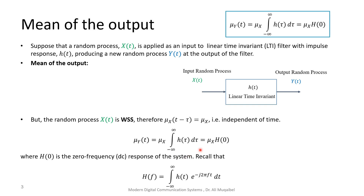The conclusion is: if you know the mean of the input and it's a wide-sense stationary process, you can easily find the mean of the output by multiplying by H(0) or the area under the impulse response. The system must be known, otherwise we don't know what h(t) or H(f) is.